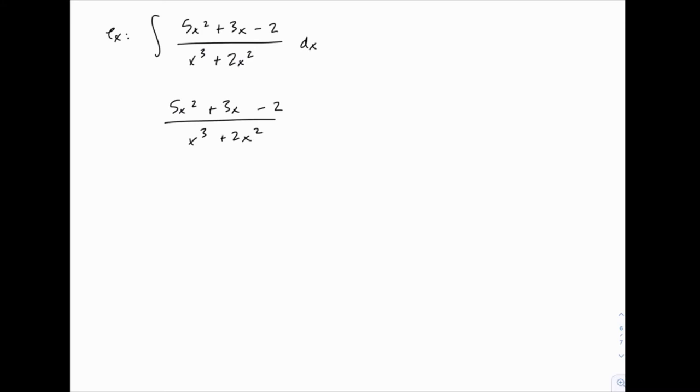As always, we want to start by factoring the denominator as much as possible. First, notice that there's an x² term that's common to both, and once we do that, we're left with x²(x + 2), which means there's nothing else to factor.